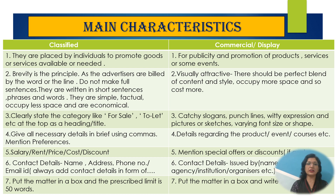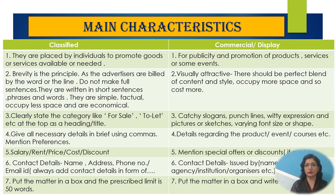Classified advertisements are simple, factual, occupy less space, and are very economical. Clearly state the category — like 'For Sale,' 'To Let' — at the top as a heading or title, and give all necessary details in brief using commas. Mention preferences; salary, rent, price, cost, and discount should also be indicated clearly. Always add contact details at the end — address, name, phone number, or email ID — and put the matter in a box. The prescribed word limit is 50 words, so never exceed it.